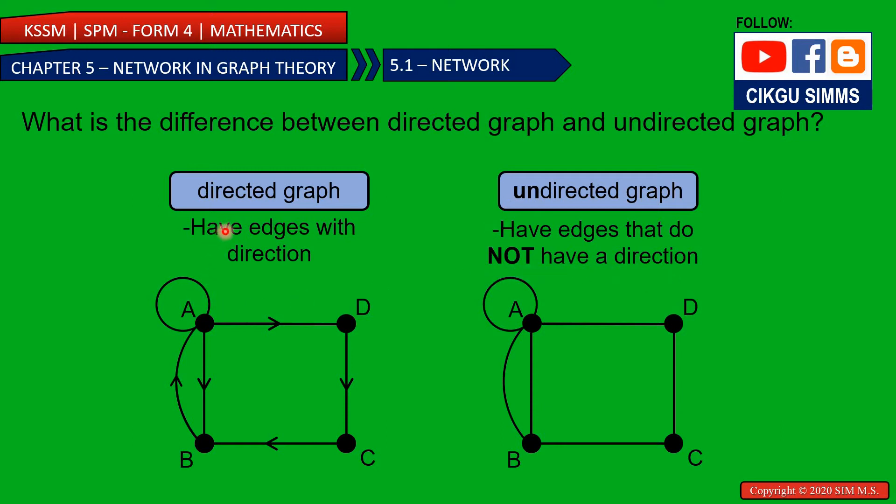So this directed, you have edges. The edges have direction. So in this case, from vertex A to vertex D. So this is a direction. This is also direction.